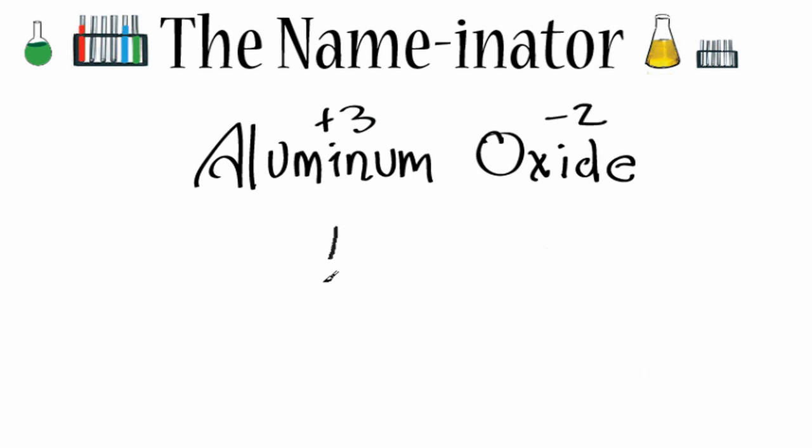So let's write the symbol for aluminum, Al, and the symbol for oxygen, and we'll put our plus 3 here and our minus 2 right there.